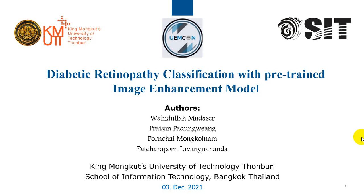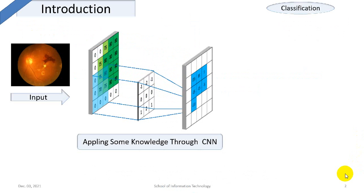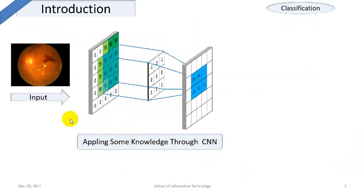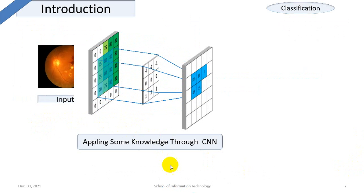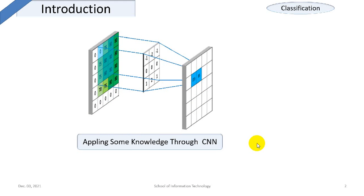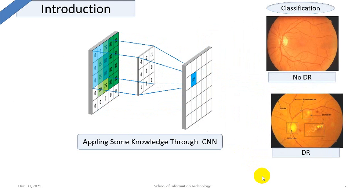Today I'm going to present my research work, which is based on Diabetic Retinopathy classification with a Pre-trained Image Enhancement Model. We are inputting some fundus images to the CNN model and applying some knowledge. As a result, we will classify whether the image is DR or no DR.